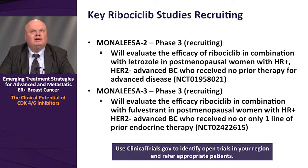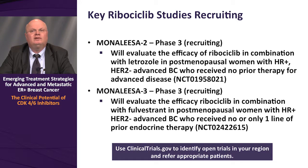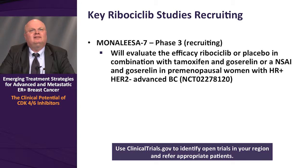In terms of ongoing ribociclib studies, the MONALEESA-2 trial is recruiting. This is a Phase III effort which will evaluate the efficacy of ribociclib in combination with letrozole in postmenopausal women with hormone receptor-positive HER2-negative advanced breast cancer who received no prior therapy for advanced disease. The MONALEESA-3 trial, also ongoing accrual in Phase III, will evaluate the efficacy of ribociclib in combination with fulvestrant in postmenopausal women with hormone receptor-positive HER2-negative advanced breast cancer who received no or just one prior line of endocrine therapy. The MONALEESA-7 trial will evaluate ribociclib or placebo in combination with tamoxifen and goserelin, or a nonsteroidal AI and goserelin, in premenopausal women with hormone receptor-positive HER2-negative advanced breast cancer.